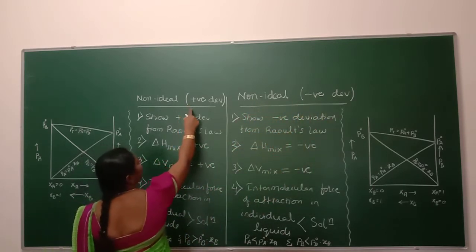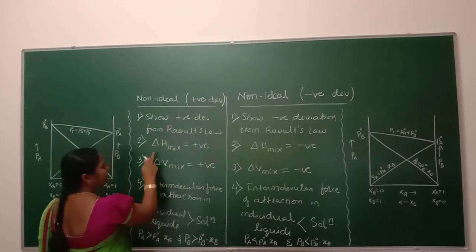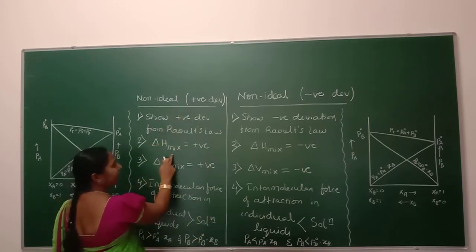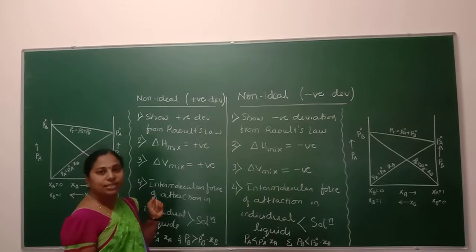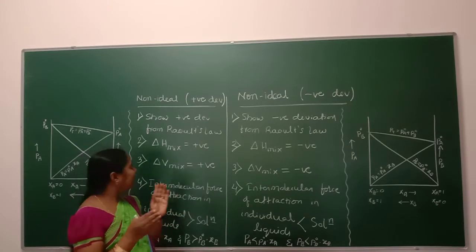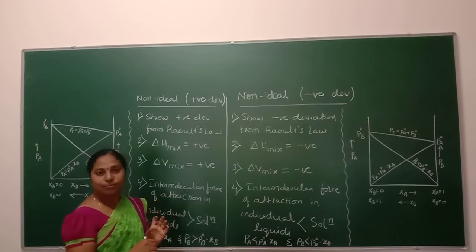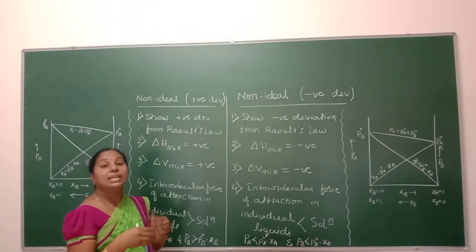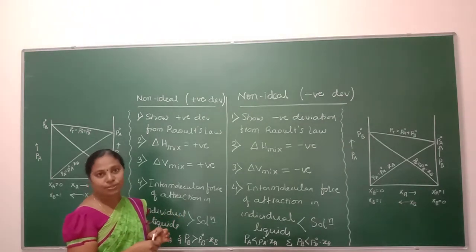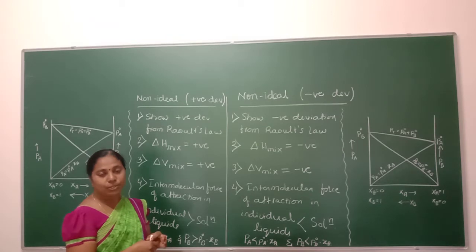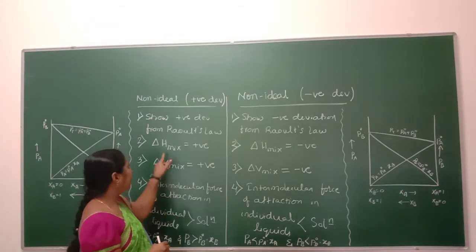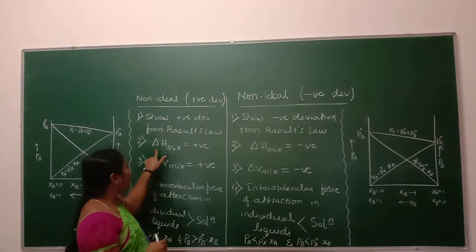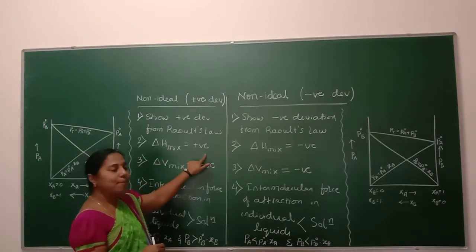In case of non-ideal positive deviation, the value of delta H of mixing is positive. What is the meaning of that? During the mixing of the two liquids, there is an increase in the heat change produced. That means heat is gained by the system, and hence the value of delta H of mixing is positive.